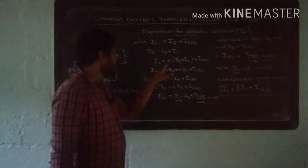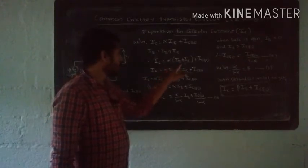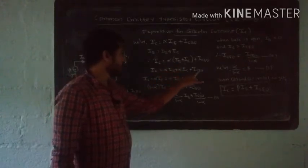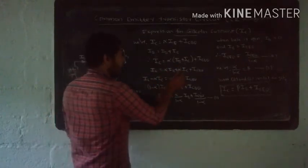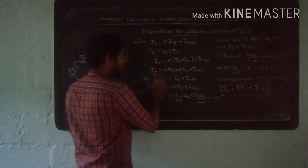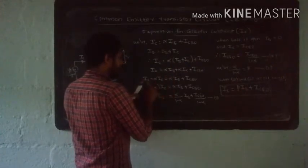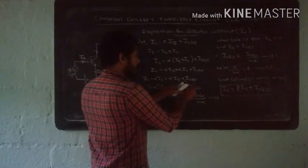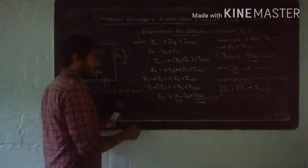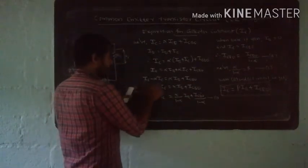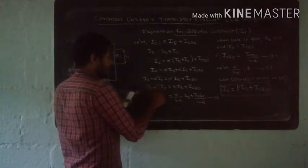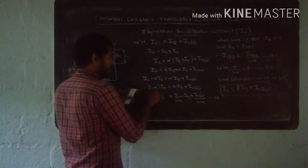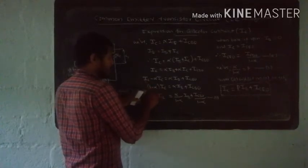Expanding: IC equals alpha times IB plus alpha times IC plus ICBO. Moving alpha IC to the left-hand side: IC minus alpha IC equals alpha IB plus ICBO. Taking IC common: (1 minus alpha) times IC equals alpha IB plus ICBO.